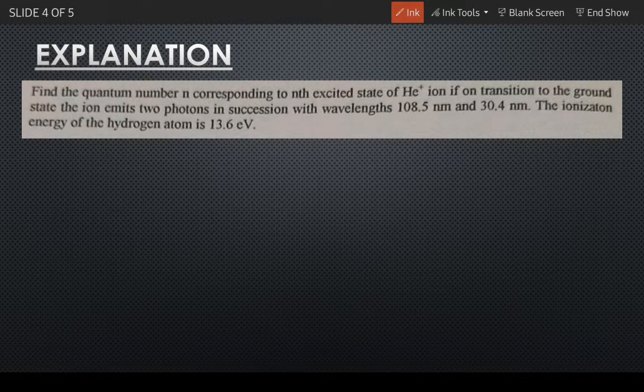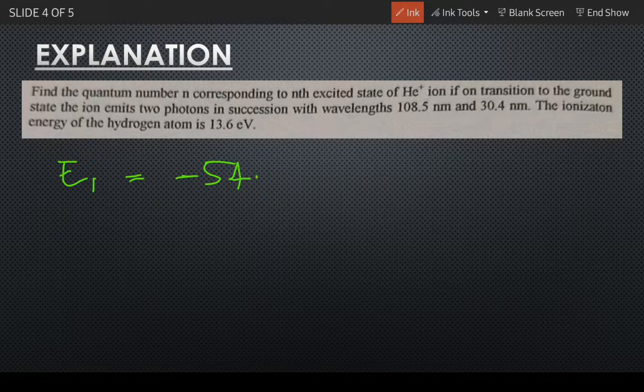So generalizing, we get energy for ground state will be equal to minus 54.4 electron volts.